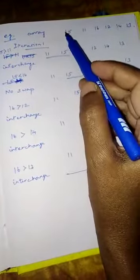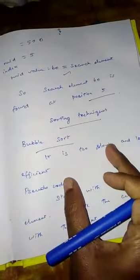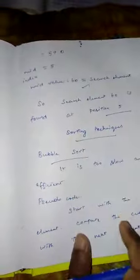To summarize bubble sort: write the numbers first, then take the current element with the next element. If the current element is greater than the next element, swap; if not, write as such. Repeat the same process until all the elements are sorted and you get the sorted array. The key concept is: take the first two elements, compare — if first is greater than second, swap; if not, write as such.